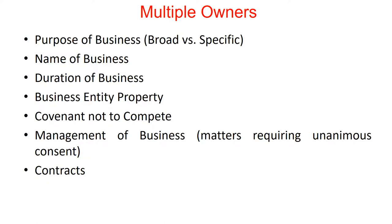Defining the purpose is important — that broad definition can cause problems down the road. Next, agree on the name of the business. This seems pretty obvious, but it's remarkable how many times I've seen multiple owners have difficulty deciding what the correct name of the business is — whether there's a comma before the LLC or not, what abbreviations are included or not. Reach an agreement: what are we going to call the business? If it's going to be called Smith and Jones, decide whether Smith comes first or whether it should be Jones and Smith. Make those decisions before you start the business.